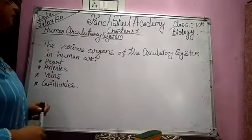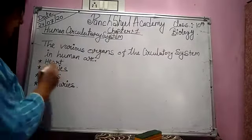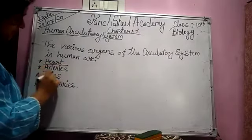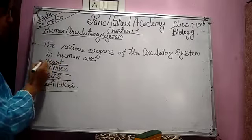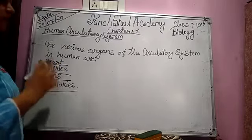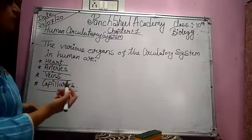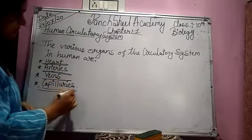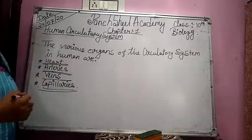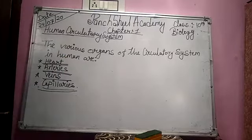Generally, if we talk about the human circulatory system, the various organs of the circulatory system in humans are: heart, arteries, veins, and capillaries. These organs compose together and form a system called the circulatory system. This human circulatory system is a very important organ system of the human body, which is responsible for transporting material inside the body.